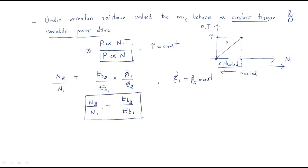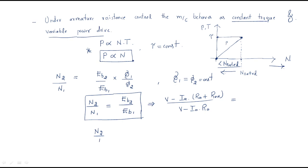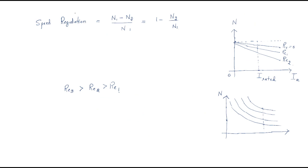Speed is proportional to back EMF directly — when back EMF varies, speed varies. For Eb2, replacing with the expression when external resistance is added: Eb2 = V minus Ia(Ra + R_ext). Substituting into the ratio gives: n2/n1 = 1 minus (Ia × Ra / V). So this is the speed ratio with and without external resistance.